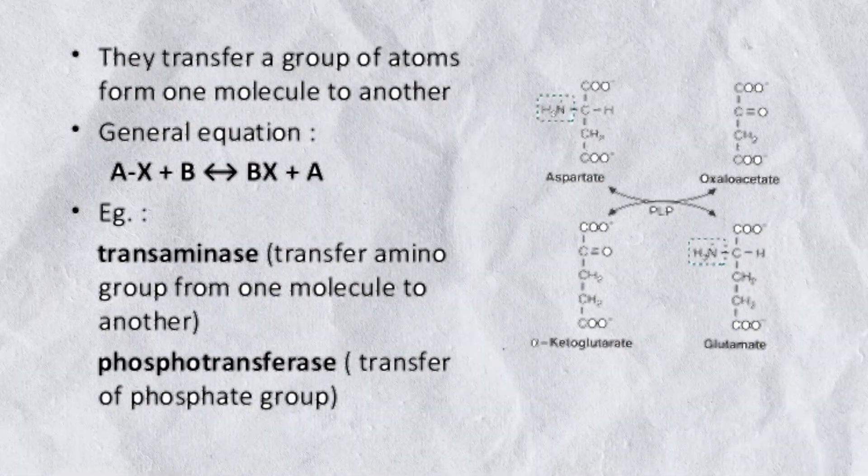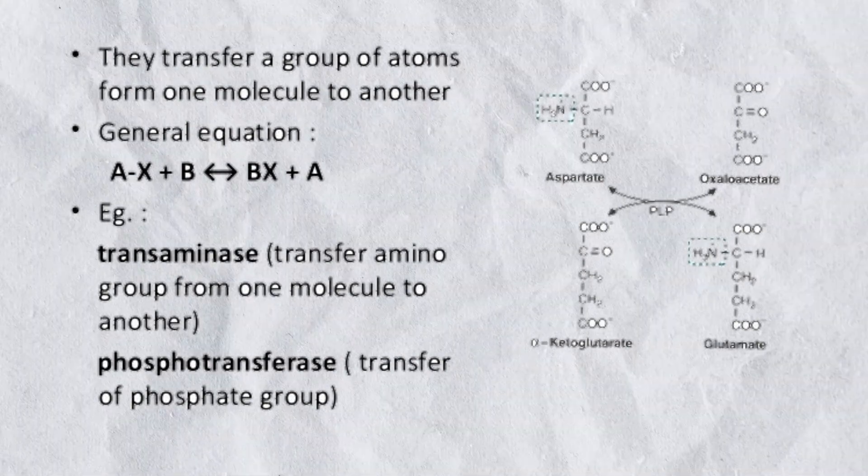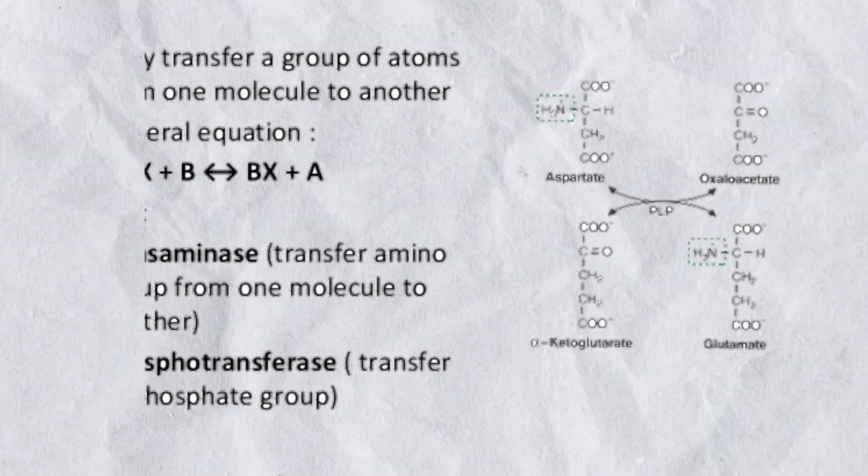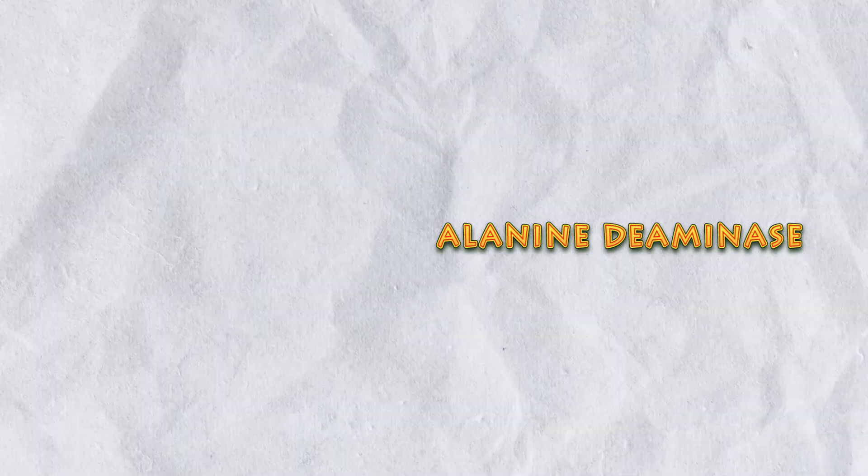Type number two: Transferases. Bring along the transfer of groups of atoms, such as methyl, acetyl, or amino groups, from one molecule to another molecule. Acetate kinase and alanine deaminase are examples of transferases.